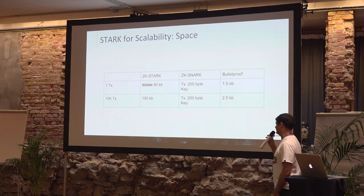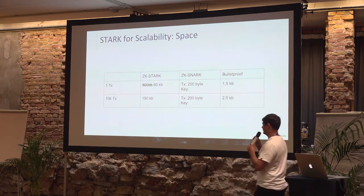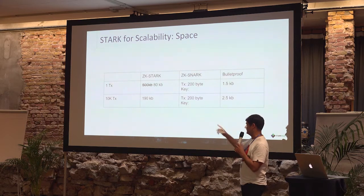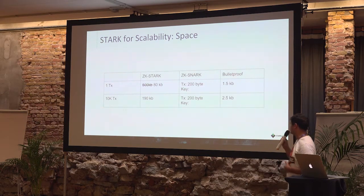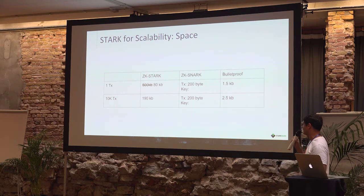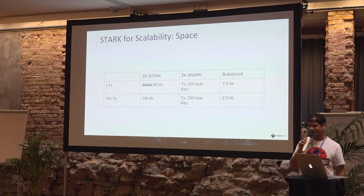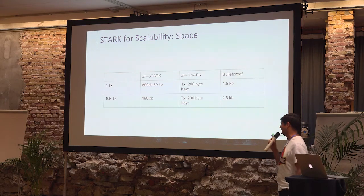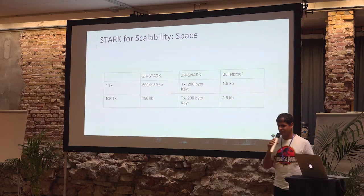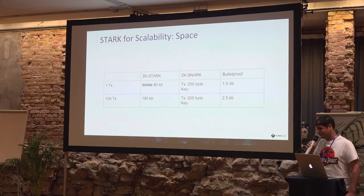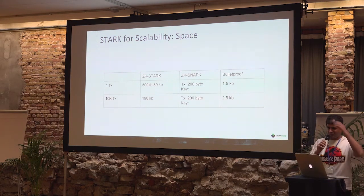This is the number for one proof of one shielded transaction. When you compare it to SNARK, the proof size is fixed at something around 200 bytes. In Bulletproof the size is about 1.5 kilobytes — still much better than STARKs in this category.